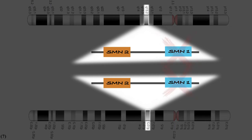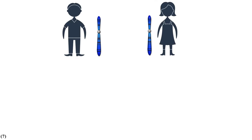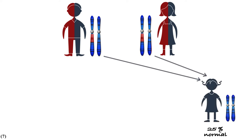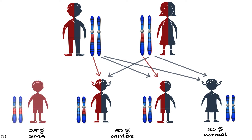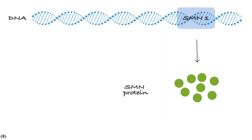SMA patients don't have the SMN1 gene on either chromosome 5, and the reason is that both parents have at least one chromosome 5 that doesn't have the SMN1 gene. So in every child's birth, we have four different possibilities: a 25% chance that the child is normal, a 50% chance that the child is a carrier, and a 25% chance that the child doesn't have any SMN1 genes. There are several ways the disease can be passed down through families, but this specific type is called autosomal recessive.